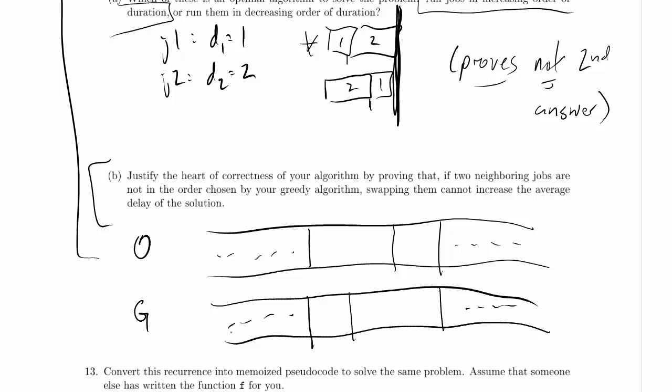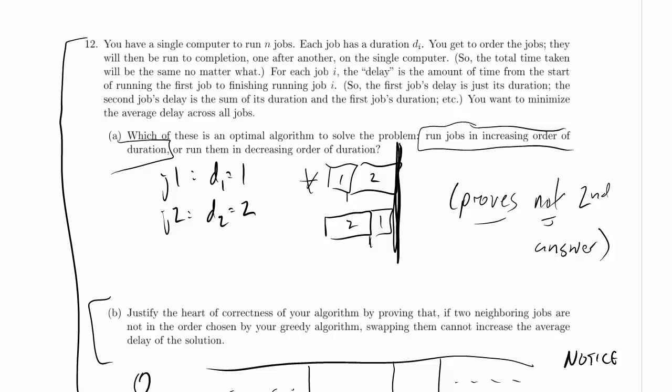Now, the thing to notice here is notice the overall delay. And I'm going to call overall delay. So let me go back up and give myself a name to refer to the overall delay of a job. So delay, I'm going to say delay of job I is, well, I can't use D because we're already using D, right? So that's unfortunate. Let's call it L for latency. So L sub I is the delay of job I.